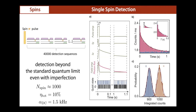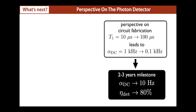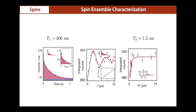We can fully characterize the spin ensemble. T1 is simply the decay of the photon flux, measured at a few hundred milliseconds. We can perform Rabi oscillations of the spin ensemble by varying the excitation energy. We can also measure the coherence time, which at this particular bias point is 1.5 milliseconds.